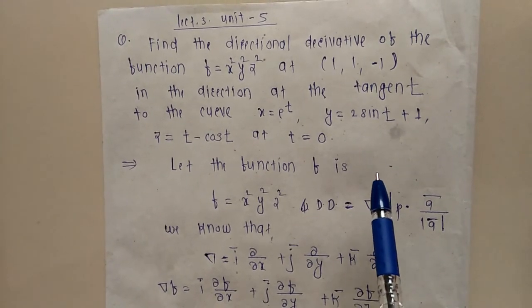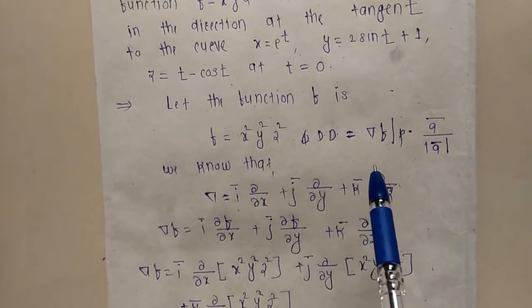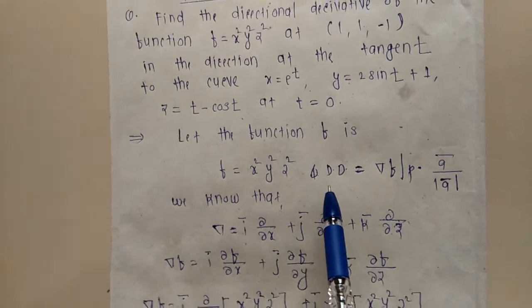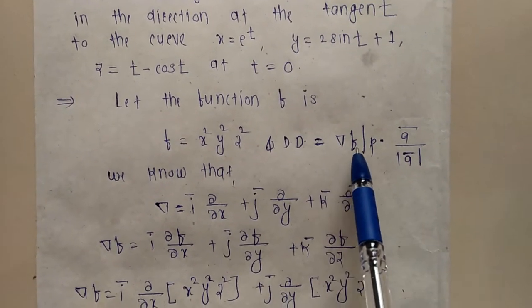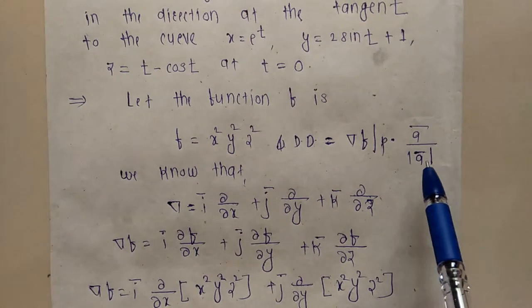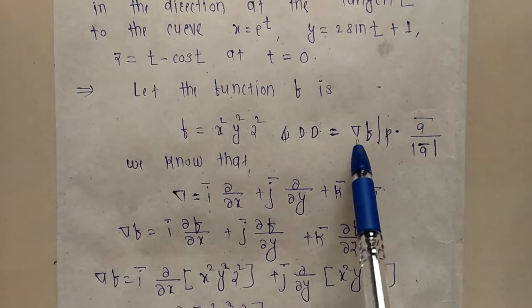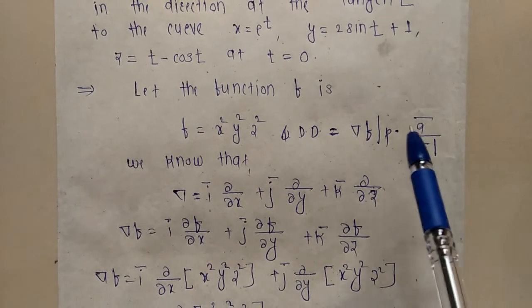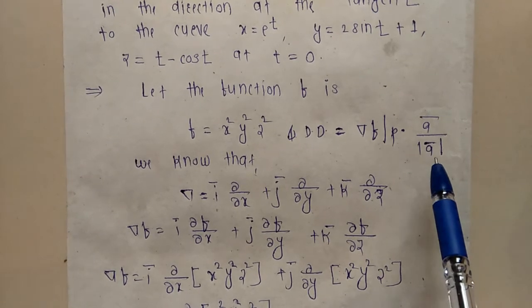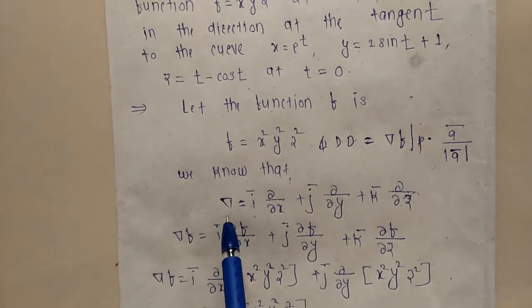Our main target is to find the directional derivative of the given function at that particular point. The formula is: directional derivative = ∇f at point P · ā / |ā|. So our targets are: first, find the value of ∇f at point P; next, find ā; then find its magnitude and take the dot product.